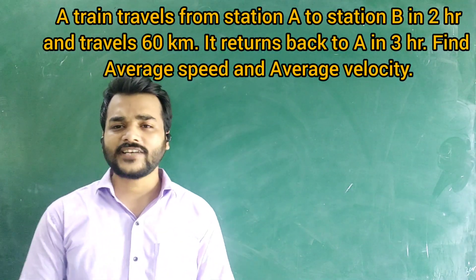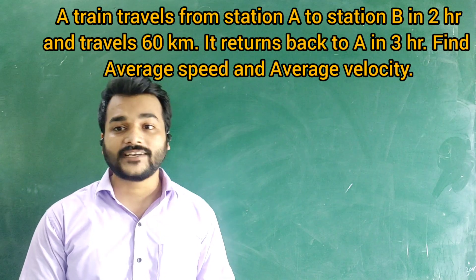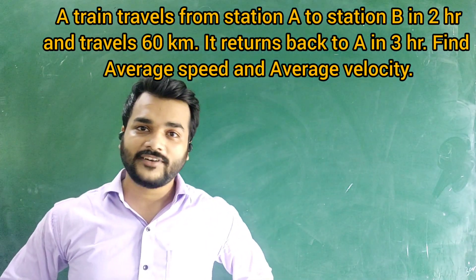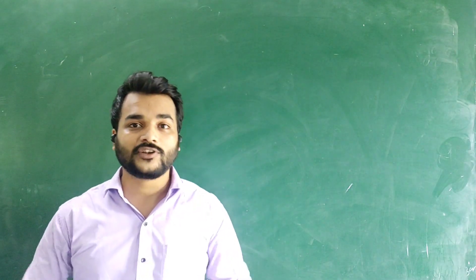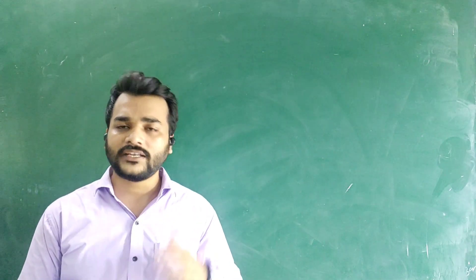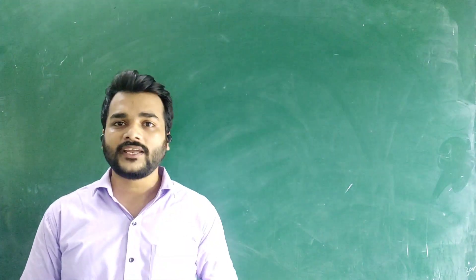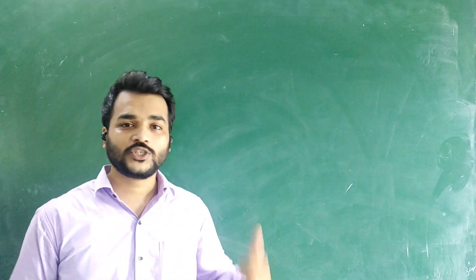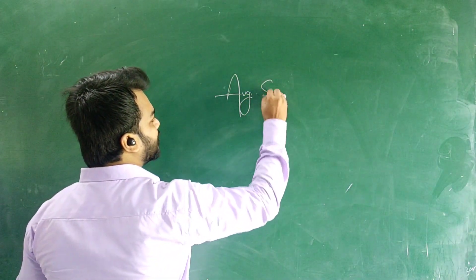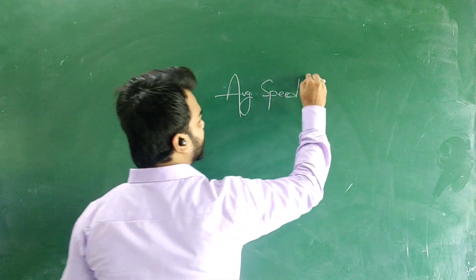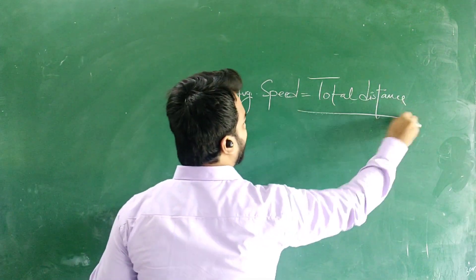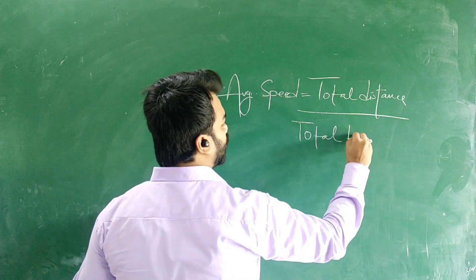The next question: a train travels from station A to station B in 2 hours and travels 60 kilometers. It returns back to A in 3 hours. Find the average speed and average velocity. The formula for average speed is total distance upon total time. The total distance is 60 plus 60 kilometers, and the total time is 2 plus 3 hours.